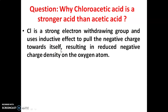Due to the presence of chlorine, which is an electron-withdrawing group, it pulls the negative charge towards itself. This results in a reduced negative charge density on the oxygen atom. Therefore, chloroacetic acid is a stronger acid compared to acetic acid.